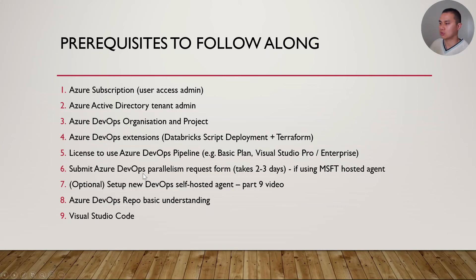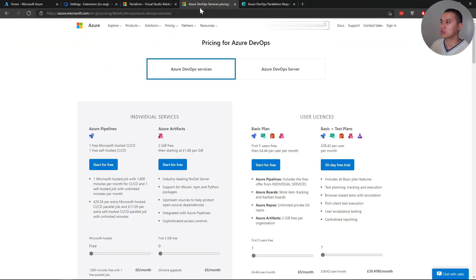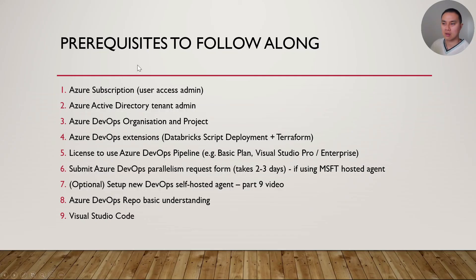The next prerequisite is having a license to use the Azure DevOps pipeline. I have Visual Studio Enterprise, but you need at least a basic plan. You can find more details on the Azure DevOps pricing website — we essentially need access to the Azure pipeline.